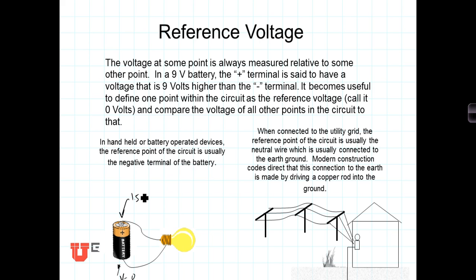On the other hand, when working with a system connected to the grid, the reference is defined differently. In a building tied to the grid, the reference is the potential of the ground at the building. To establish that ground, they drive one or more copper rods into the ground around the building, and the potential at ground becomes the reference of zero volts.